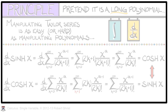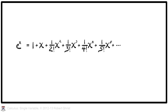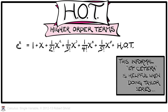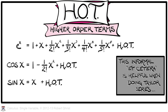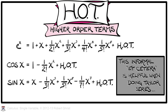We're used to writing out Taylor Series term by term, but since there are infinitely many terms we can't write them all. We typically use a plus dot dot dot or an ellipsis for the tail of the series. But there's another terminology we'll begin using: HOT, or higher-order terms. This is an informal way of saying et cetera. For example, cosine of x is 1 minus x squared over 2 plus higher-order terms; sine of x is x plus higher-order terms, or x minus x cubed over 3 factorial plus HOT. We can stop whenever convenient — that's useful when performing computations on Taylor Series.